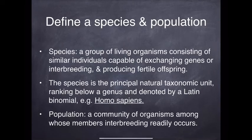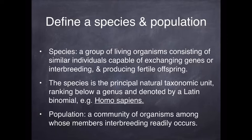Just a quick recap of the definitions of species and population. A species is a group of organisms of the same type that are able to interbreed and produce fertile offspring, whereas a population is a community of organisms of the same species in which interbreeding occurs. So we can talk about the Cape Town population of sparrows versus the Joburg population of sparrows — they are not able to interbreed because they cannot fly that distance, however they are the same species.